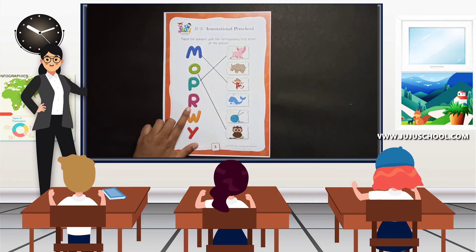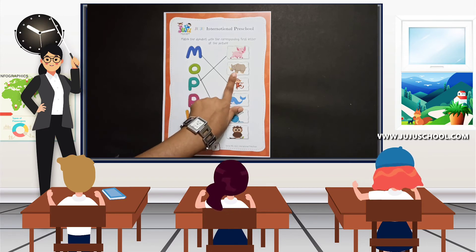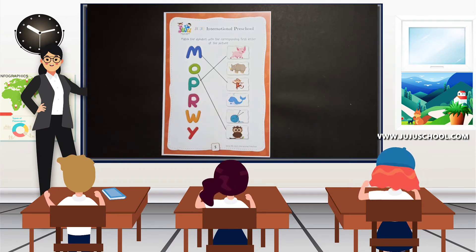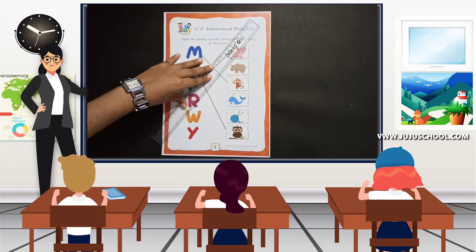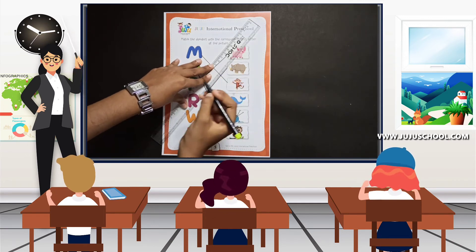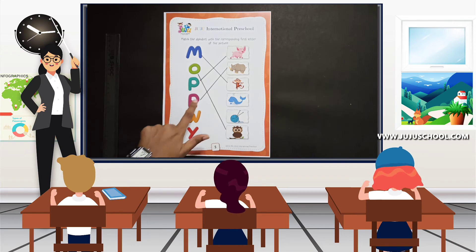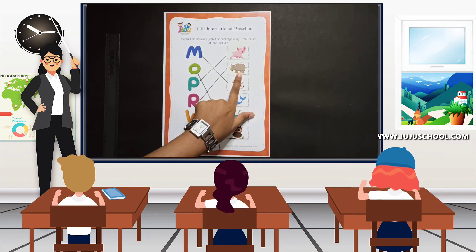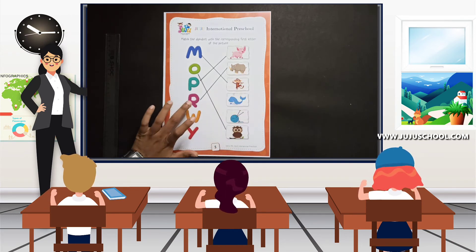Next we move on to the alphabet R. R for — yes, it's rhinoceros! Take your scale and your pencil, place it correctly and draw a straight line from R to rhinoceros. R for rhinoceros — rhinoceros starts from the letter R.